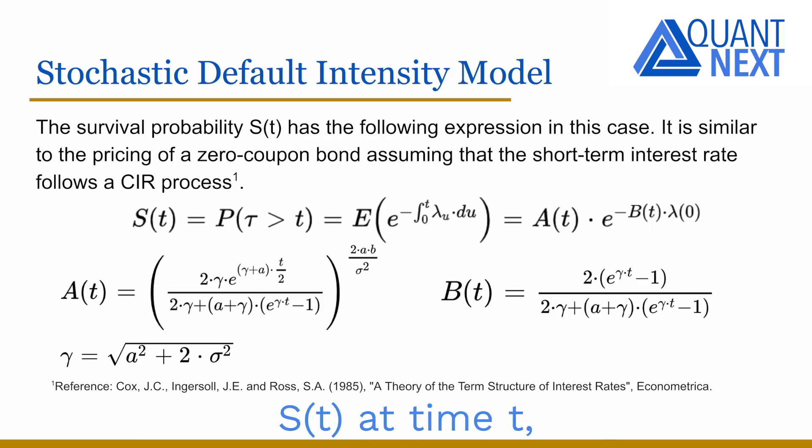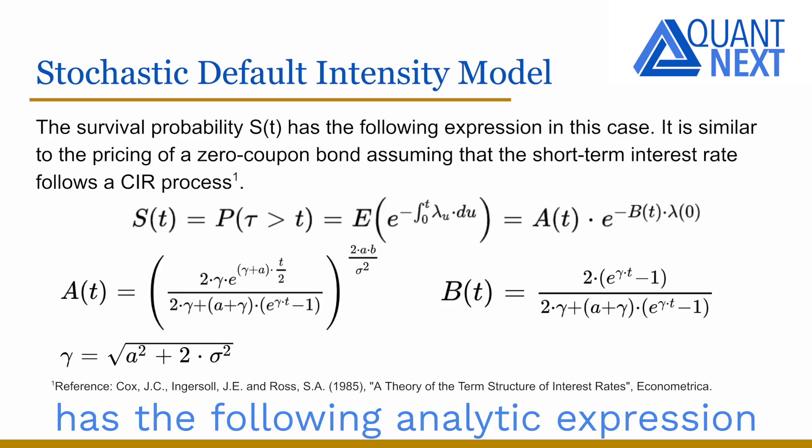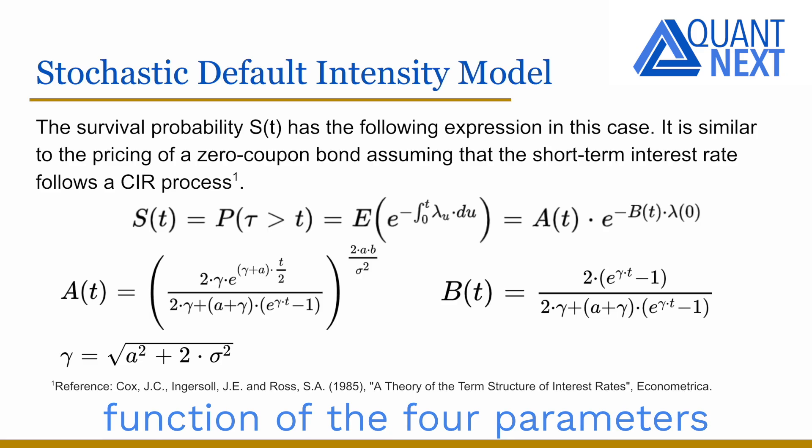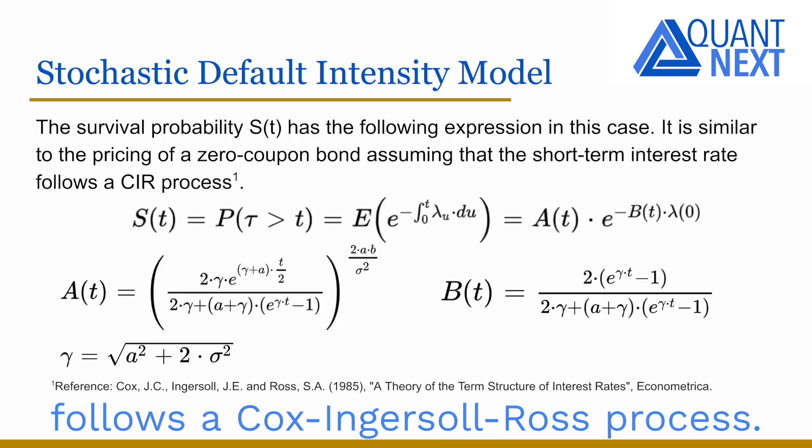In this case, the survival probability S(t) at time t, so 1 minus the default probability, has the following analytic expression function of the four parameters of the model. It is very similar to the pricing of a zero-coupon bond assuming that the short-term interest rate follows a Cox-Ingersoll-Ross process.